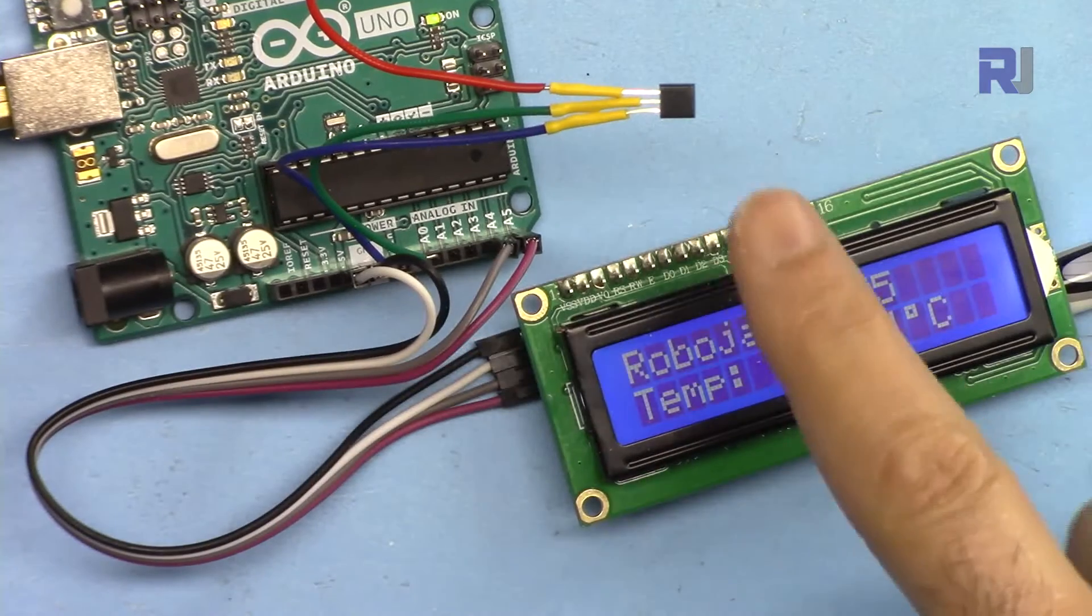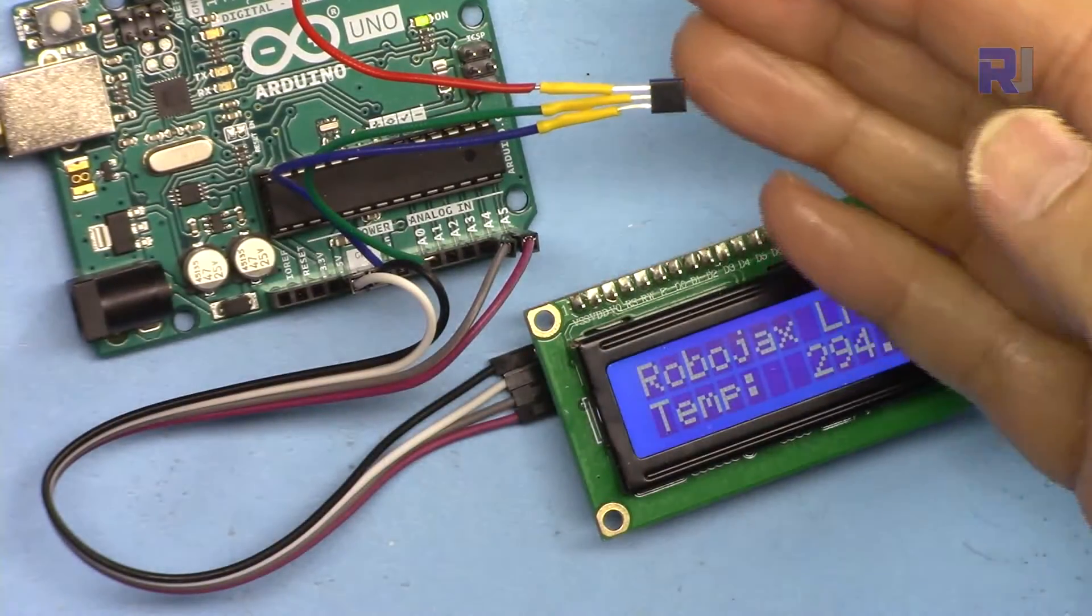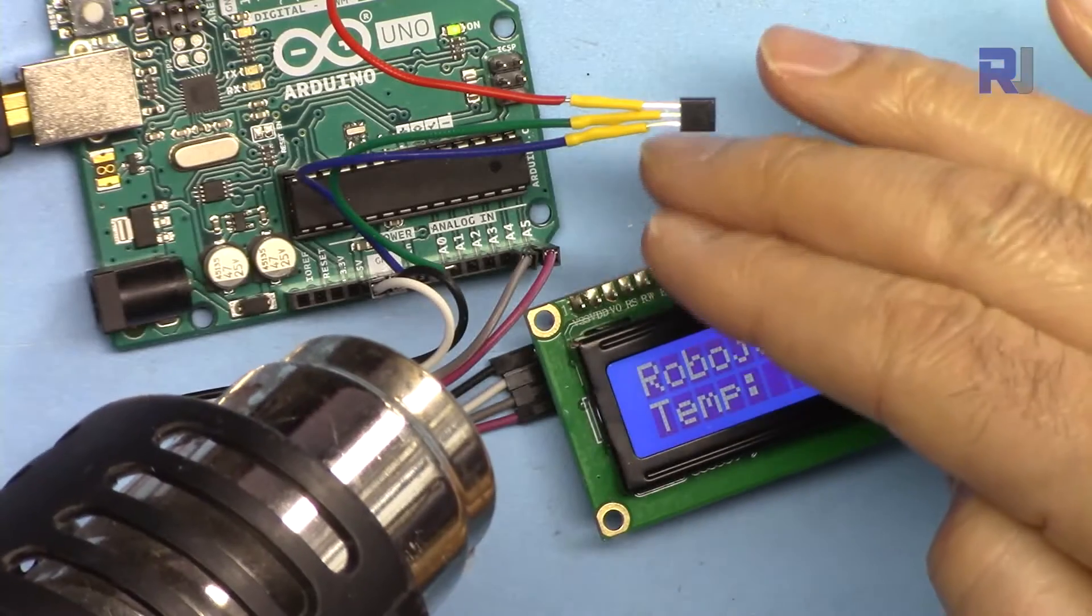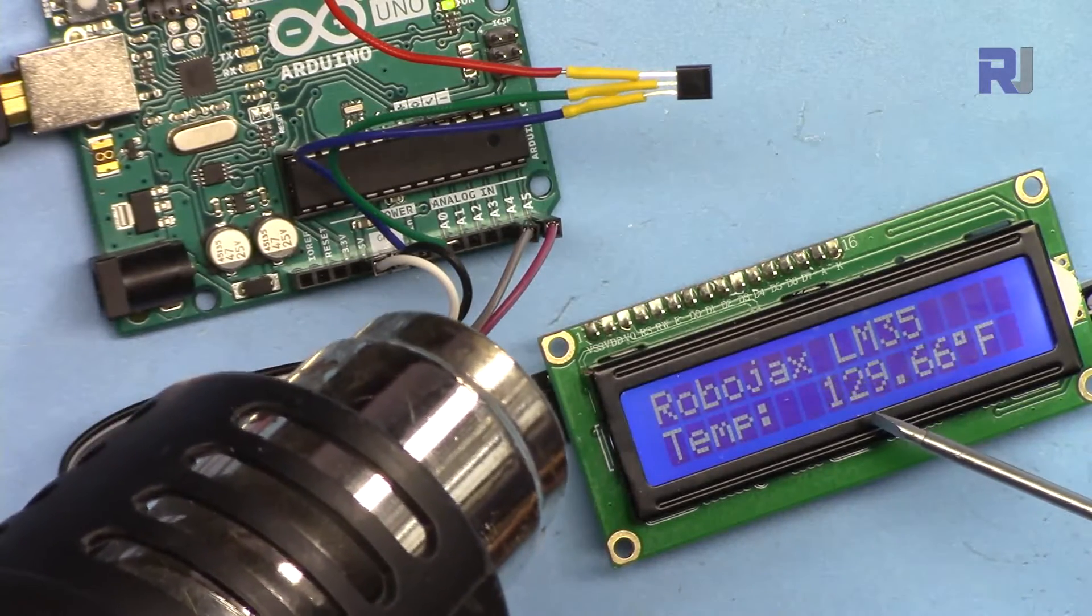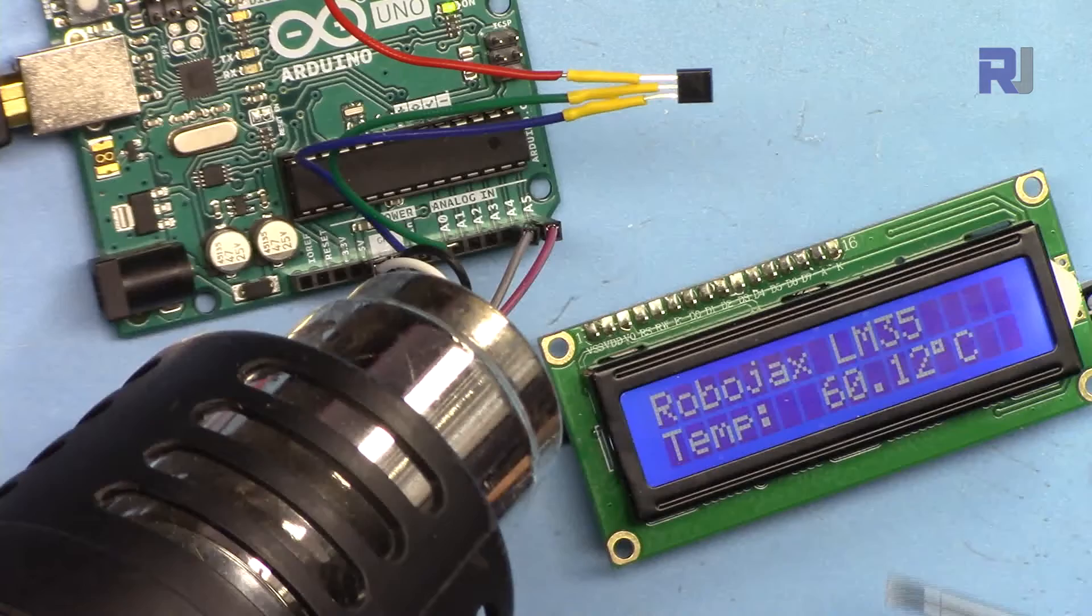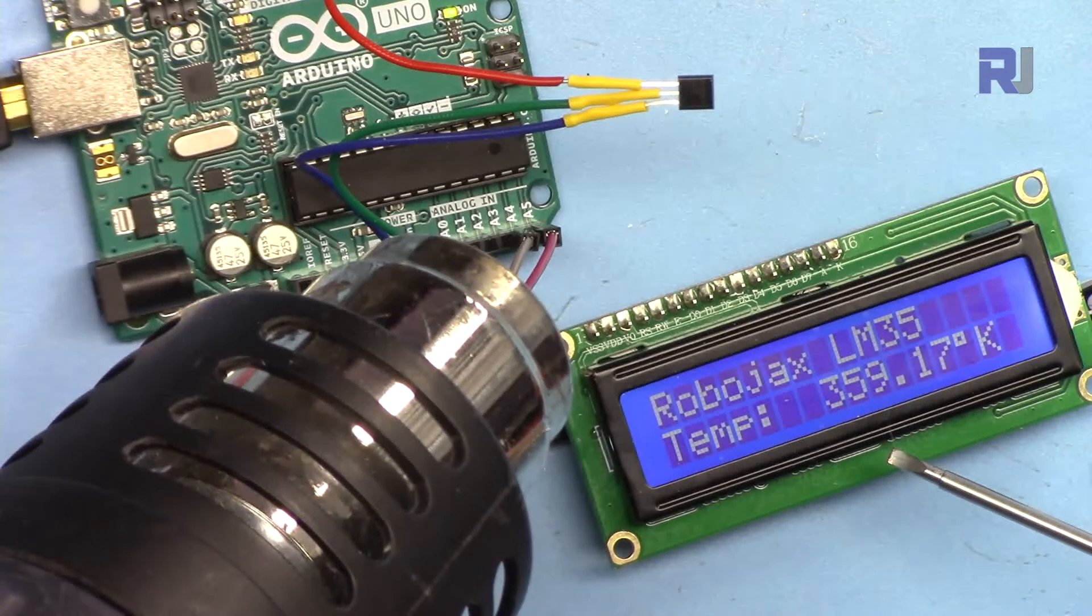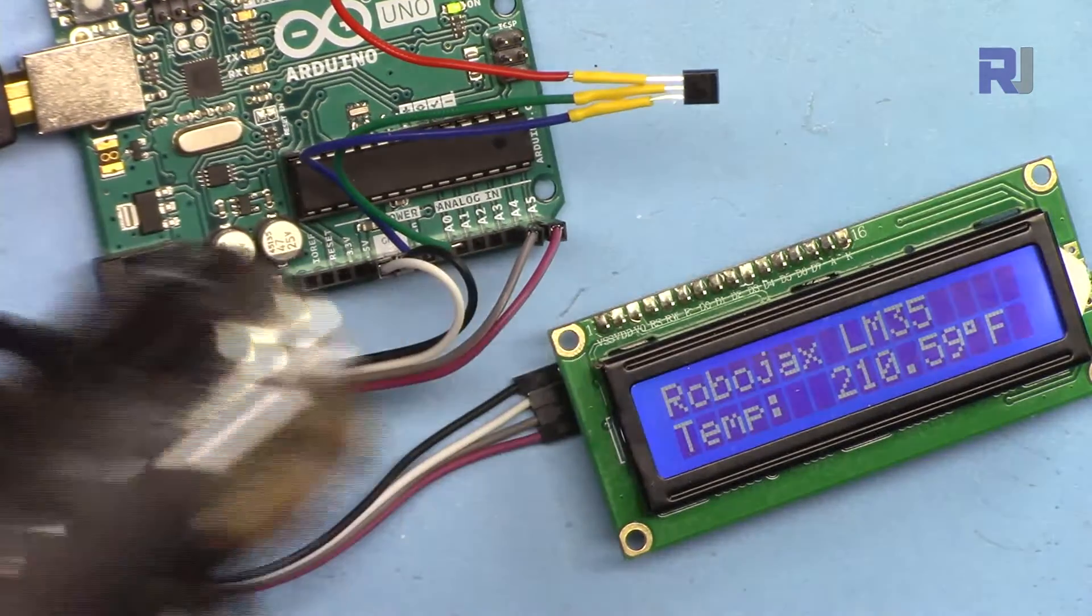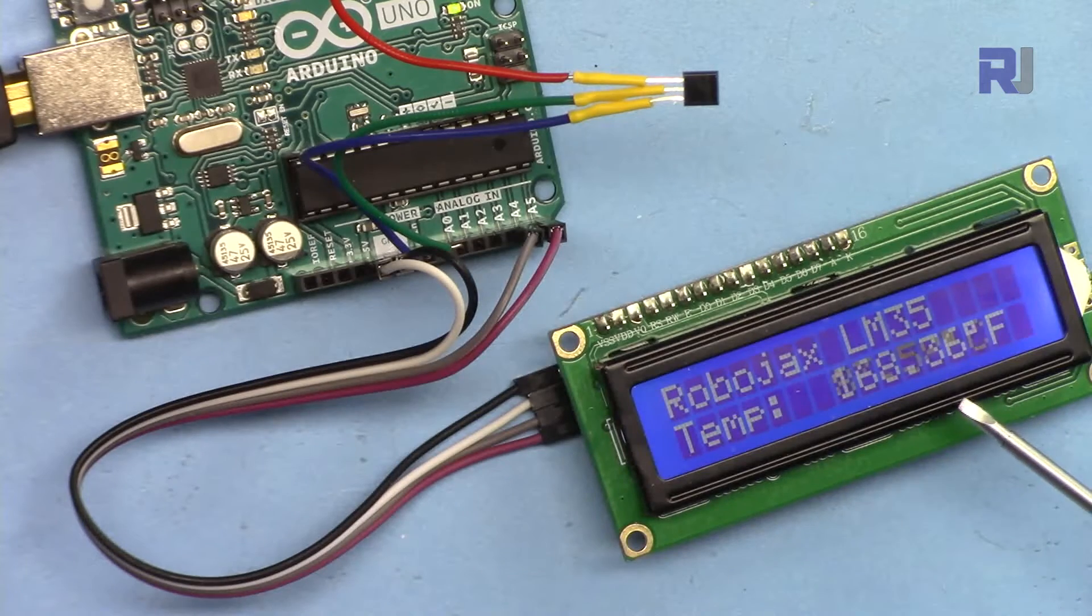Now let me demonstrate it. Now this is showing the room temperature and I'm using this heat gun to apply some heat on this. So the temperature is increasing, as you can see it shows 55.